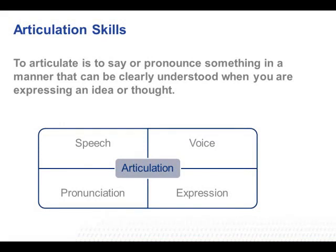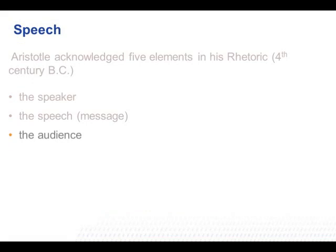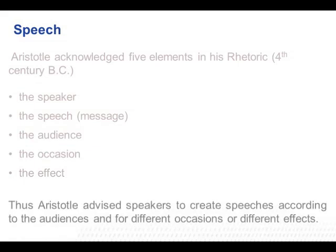Aristotle acknowledged five elements in his rhetoric in the fourth century BC: the speaker, the speech (that is the message), the audience, the occasion, and the effect. Thus Aristotle advised speakers to create speeches according to the audiences and for different occasions or different effects.